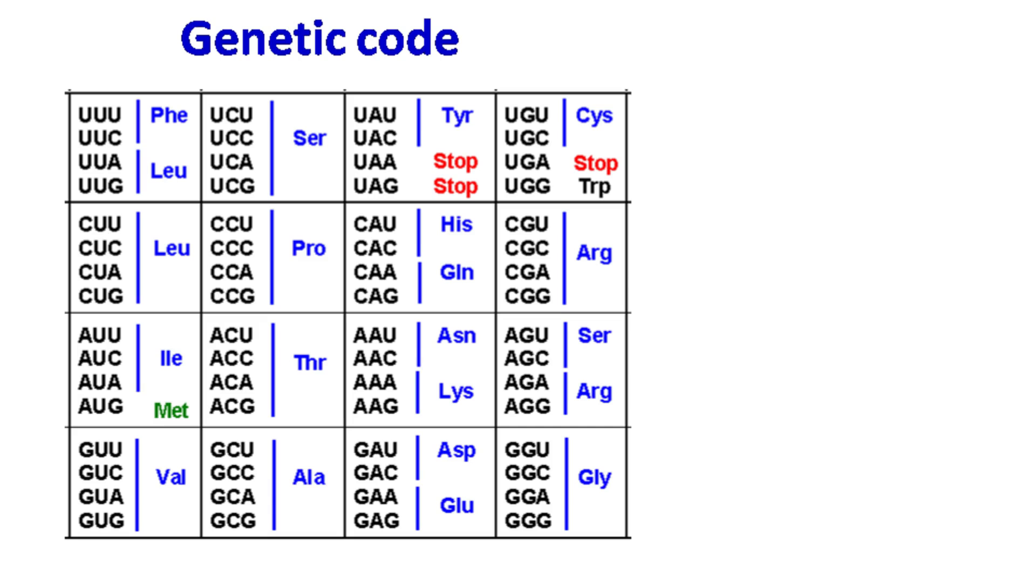The genetic code consists of 64 triplets of nucleotides that code for 20 amino acids. Each of these triplets are known as codons.